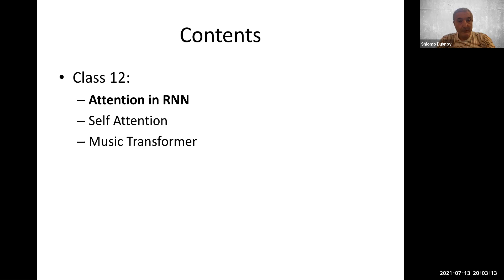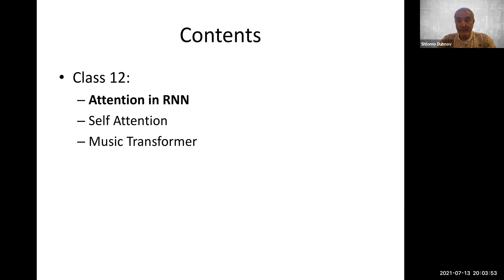Following the chronological development, the first transformer paper was called 'Attention is All You Need,' grounding the theory in attention. Another perspective comes from word embeddings like Word2Vec. Since in the previous class we talked about RNNs, it's natural to extend RNNs through attention and then address the transformer itself.